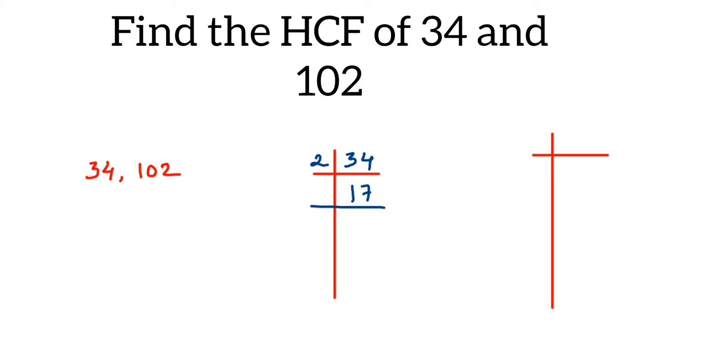Then next we have 17. 17 is a prime number, doesn't go in any table, so 17 ones are 17. That's it.